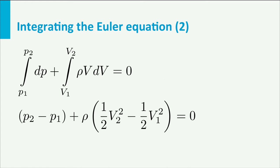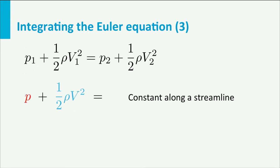This develops into P2 − P1 + ρ(½V2² − ½V1²) = 0. Rearranging, P1 + ½ρV1² = P2 + ½ρV2². So along a streamline we have P + ½ρV² = constant.